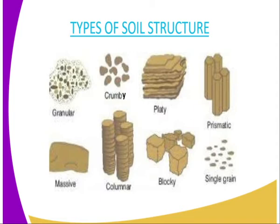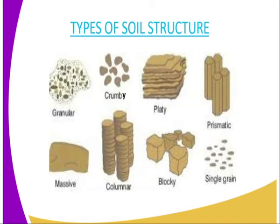So prismatic is not circular like columnar. We have the blocky soil structure, which is in the shape of building blocks used during construction work, as shown in the diagram. Then we have the single grain soil structure, well portrayed in the diagram. Finally, we have the massive structure, which is like a very big rock — bigger than blocky and irregular in shape.